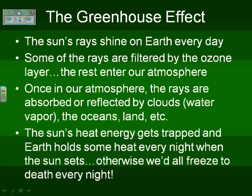As the sun's rays shine on us, they're filtered out by the ozone layer, depending on the thickness of the ozone layer, and everything else enters our atmosphere. That which enters our atmosphere is absorbed and reflected, and that heat is maintained within the atmosphere. As that heat energy gets trapped, the earth gets to hold some of that heat, so that at night, when the sun is gone, we still have some warmth maintained and the earth doesn't freeze every night.